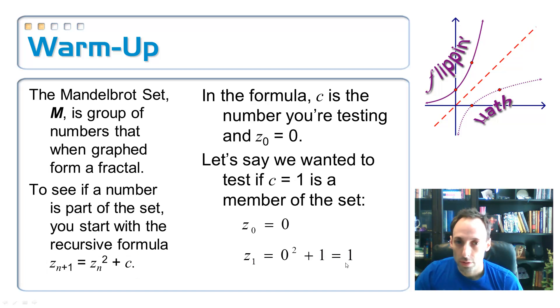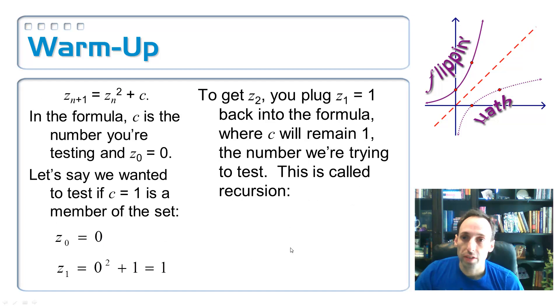So take a look. So Z sub nought is zero. So I plug it into this formula to find Z sub one. And I'm going to put that zero in there and square it plus my C value. I still get one back. Now I'm going to take this one, and I'm going to plug it back into the equation again and see what I get. And that's going to give me Z sub two. So to get Z sub two, I'm going to take the answer that I got before, this one, and plug it in and square it. So one squared is one plus one gives me two.